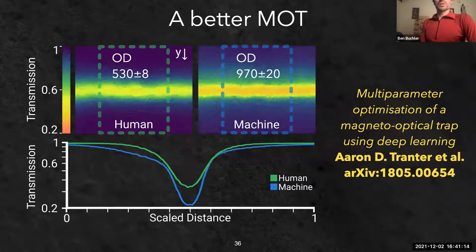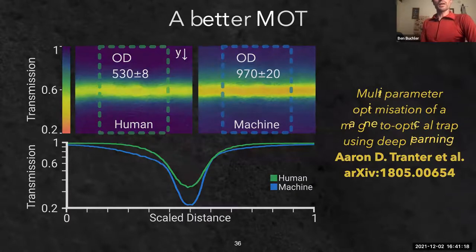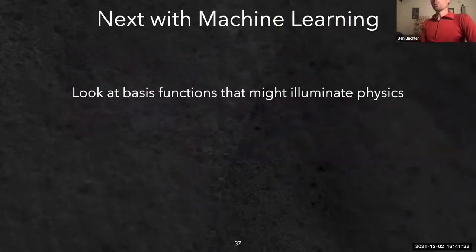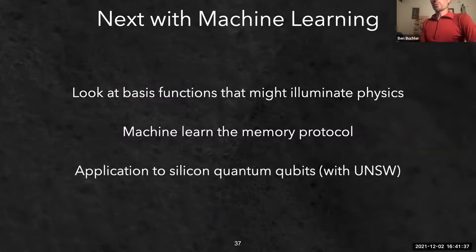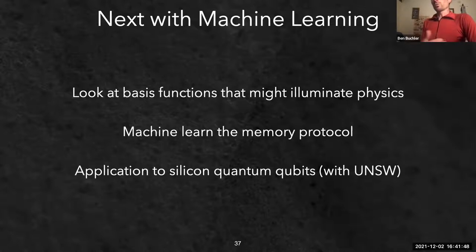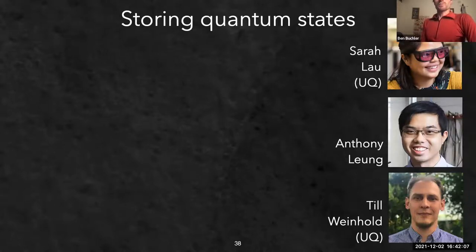The difference in optical depth between human and machine learning is clear. For future machine learning work: we'll try different basis functions, apply machine learning to the memory protocol itself to try to improve above 87% efficiency, and we've also been applying it to silicon quantum qubits at the University of New South Wales - similar pulse-shaping optimization problems that this approach should help with.